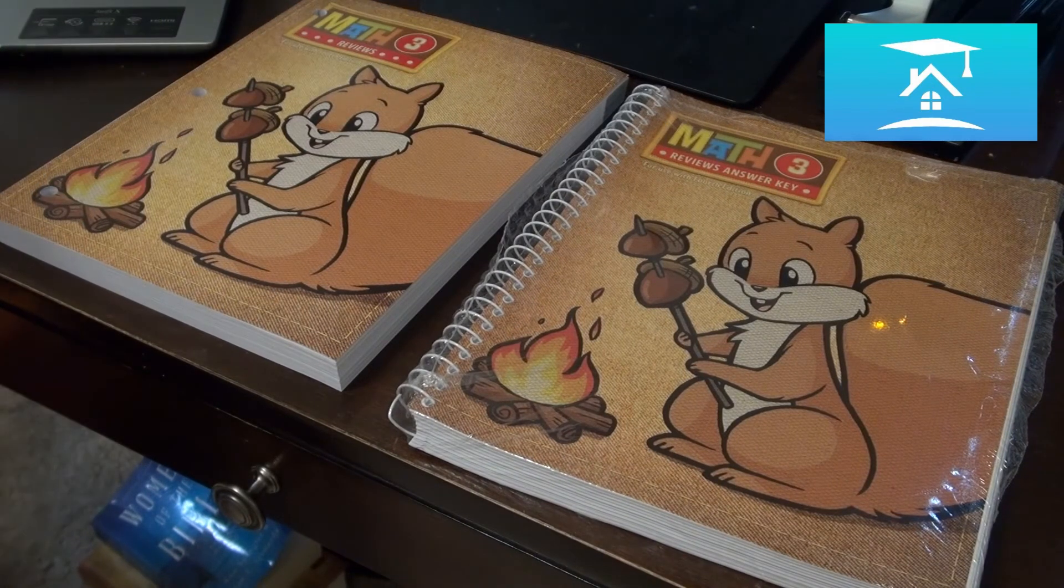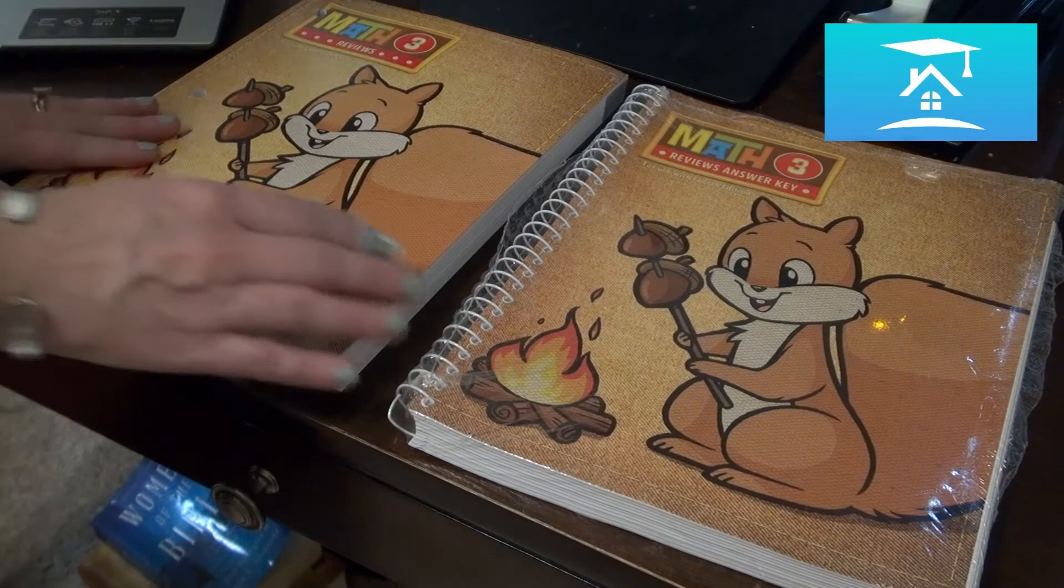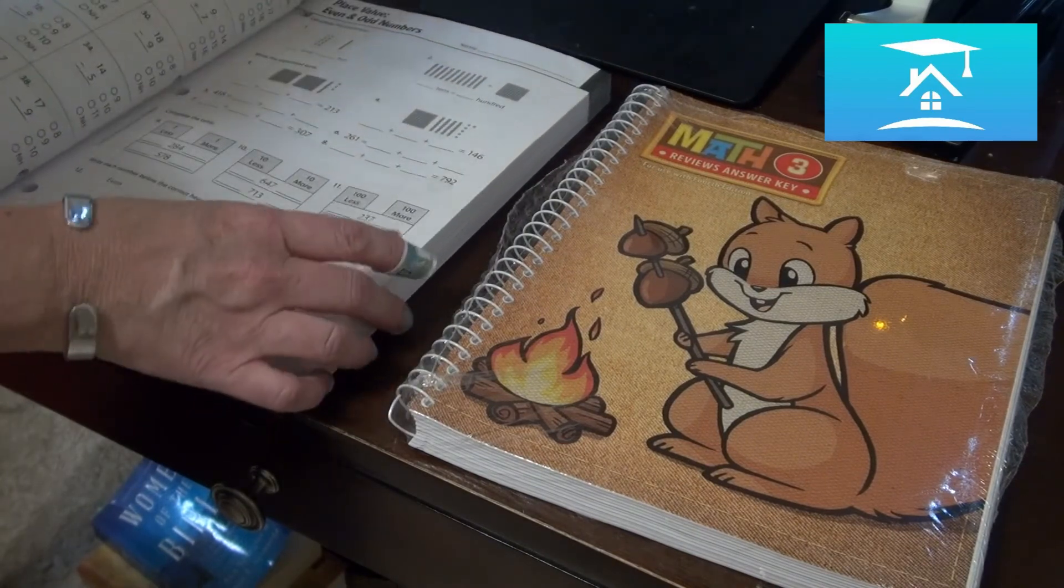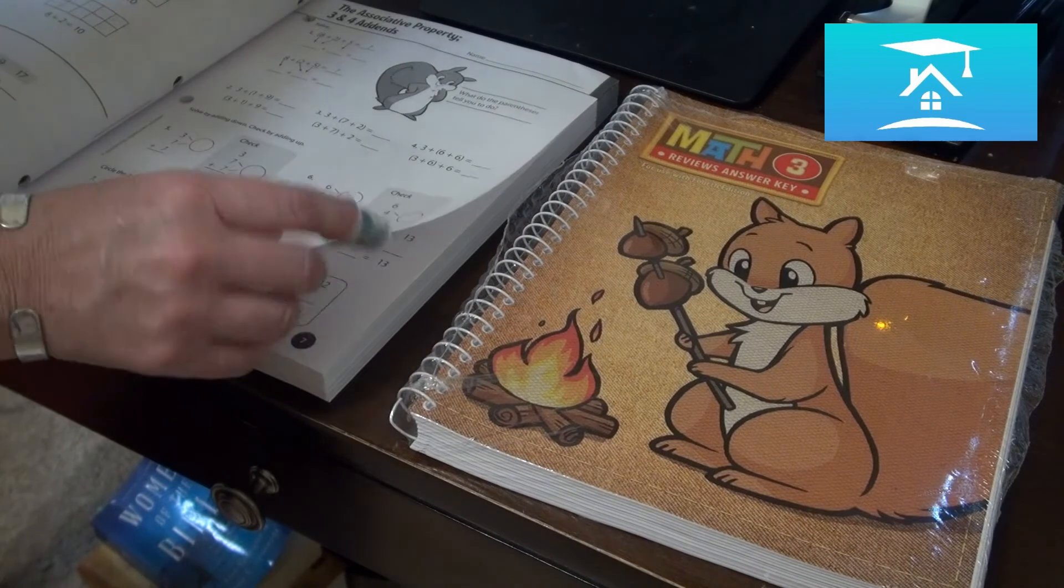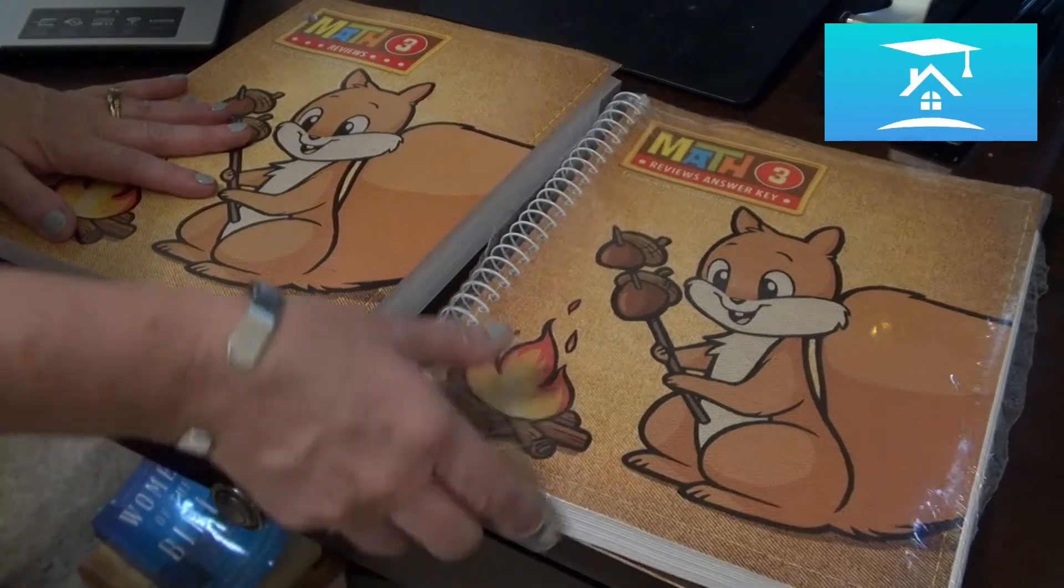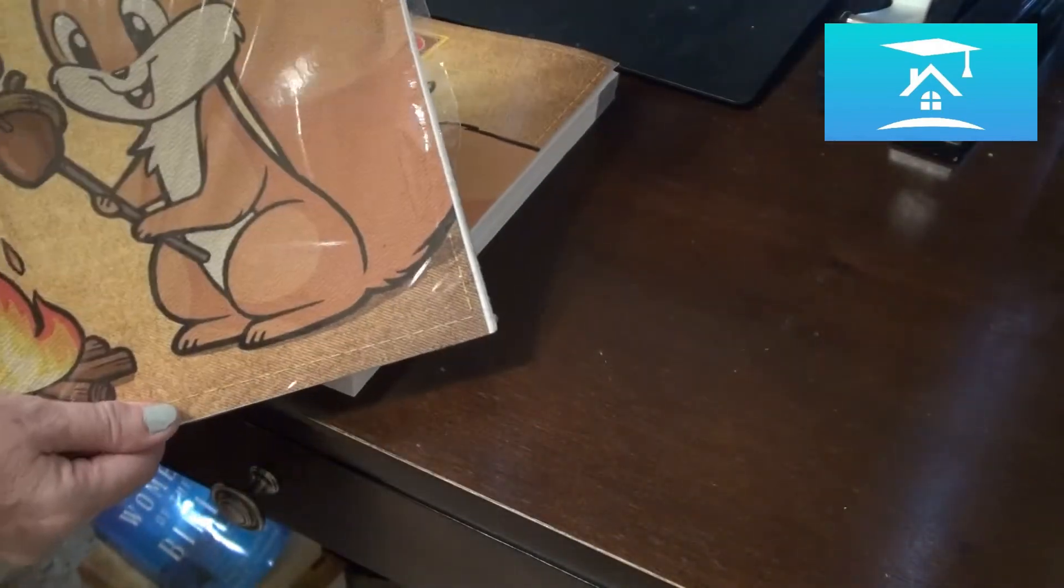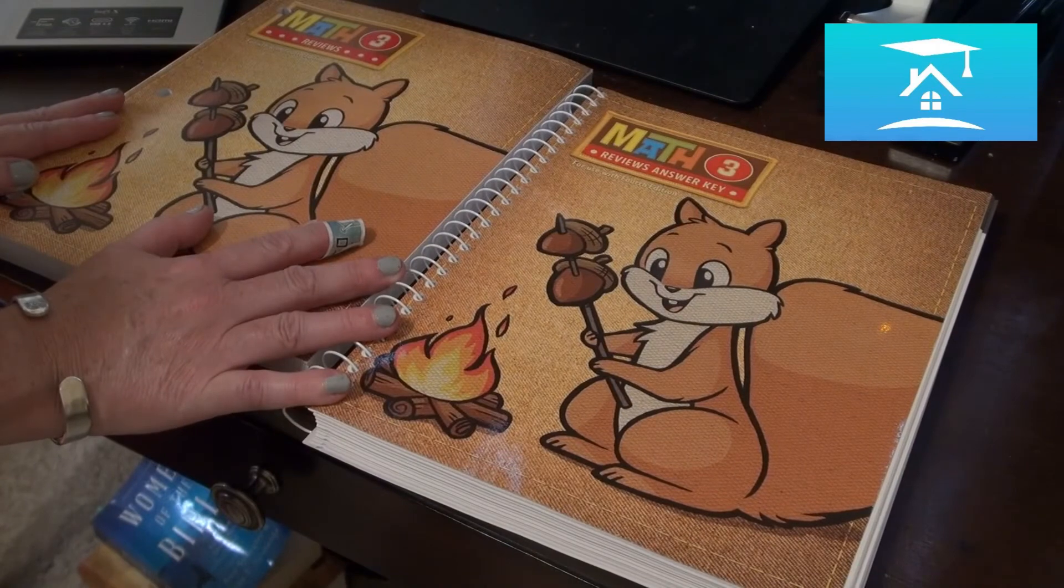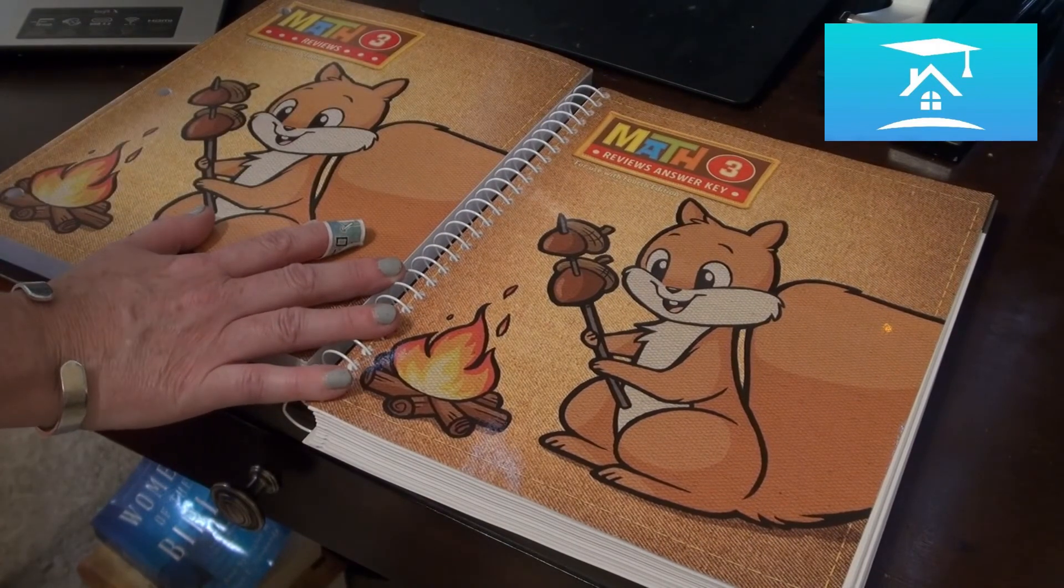Now here is something that Saxon did not have. BJU seems to have provided an additional reviews manual, but it looks like these pages are not as colorful, but that's okay. They're review. And then you also have a review answer key. This seems to be another useful tool that comes with BJU, something that we did not have with Saxon.